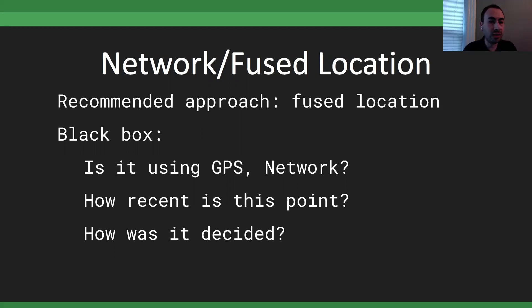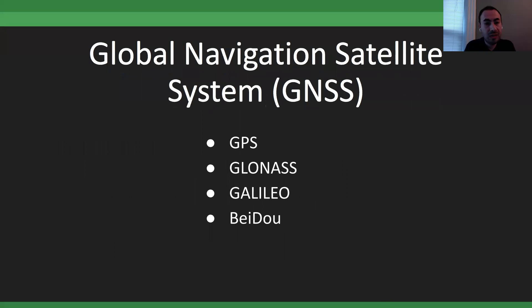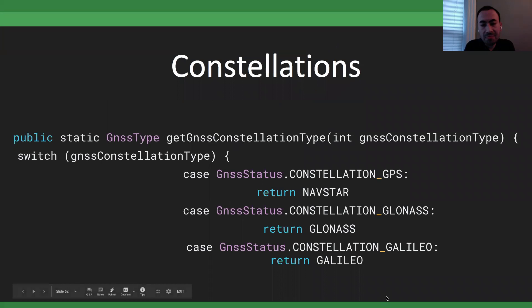As a fun fact, recent Qualcomm Snapdragon phones can combine data from multiple satellite constellations: GPS (American), GLONASS (Russian), Galileo (European), and BeiDou (Chinese). When you get a GPS readout, it's a combination of whichever constellation gives the best data at that moment. In your app, you can distinguish which constellation provided each data point.